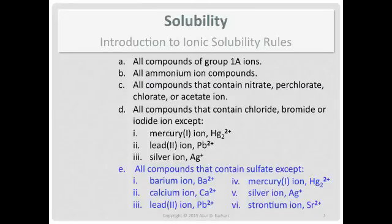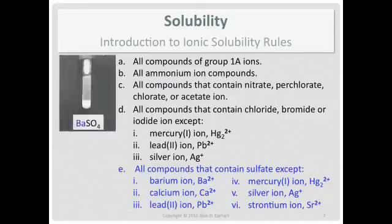For sulfates, the exceptions list is a little longer — there are six common exceptions. Your first impulse when you see a sulfate compound is that it's soluble, unless it's one of these six. Also, in terms of priority, Sodium Sulfate is soluble because it's Group 1A — it's important to learn these rules top-down. For Barium Sulfate, you go through the rules: Group 1A? No, barium is 2A. Ammonium? No. Nitrates, perchlorates, chlorates, or acetates? That's sulfate, not those. Chlorides, bromides, or iodides? No, it's sulfate. All compounds containing sulfate — it's soluble. Except, it's barium — so insoluble.